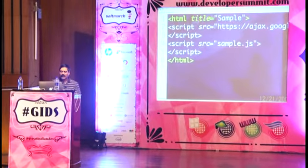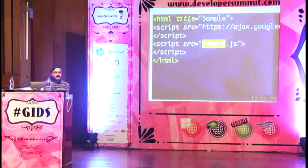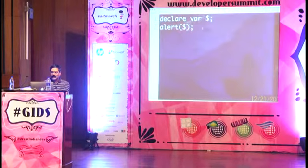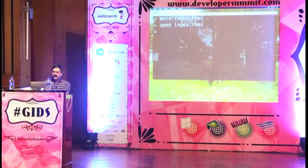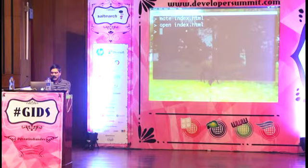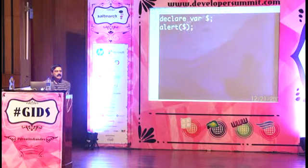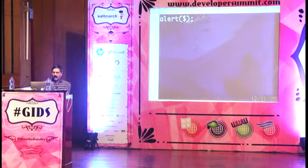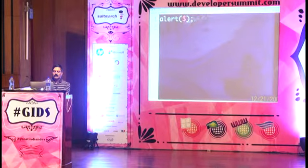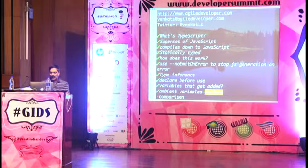To demonstrate this working, I bring in an index.html that references jQuery and loads sample.js. This would bring in the dollar definition, and when loaded in a browser it should pop up an alert. It compiled the file, and the output is just `alert($)` without the declare — that's because of the definition. If I remove the declare and try to run it, TypeScript gives a compilation error and the output JS file is empty because I told it not to generate a file on error.